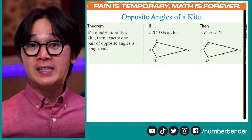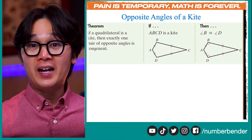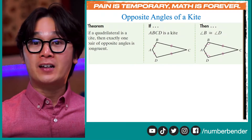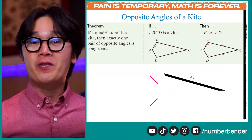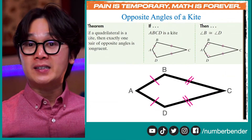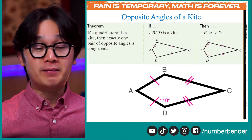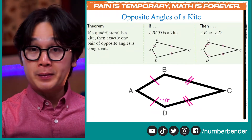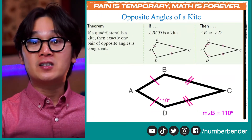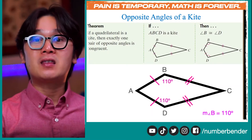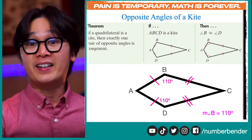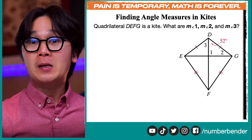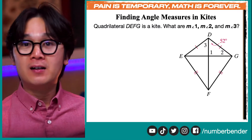The second theorem for our kite: in kite ABCD, we have congruent angles, and those congruent angles are the opposite angles B and D. So if the measurement of angle D is 110 degrees, using this theorem we can find the measurement of angle B without any algebra — it is also 110 degrees — using the theorem of opposite angles of a kite.